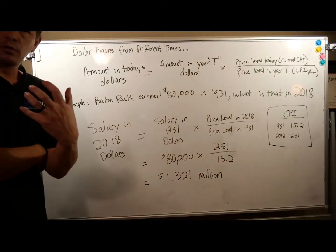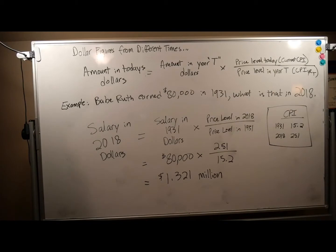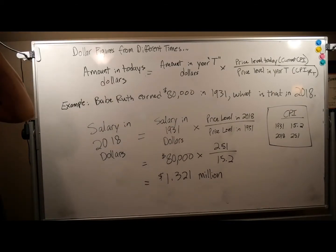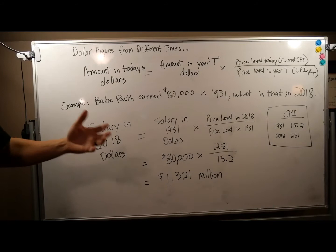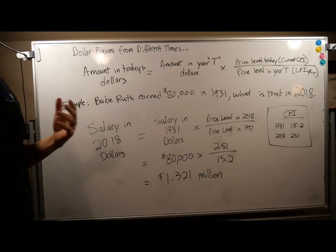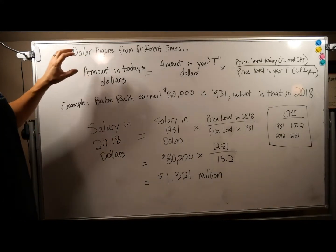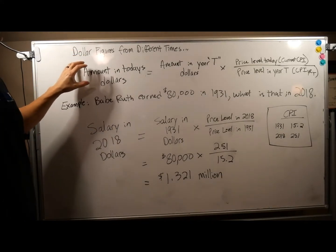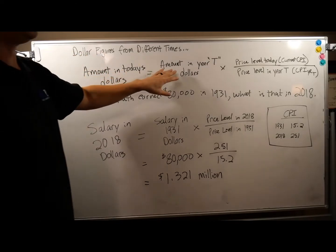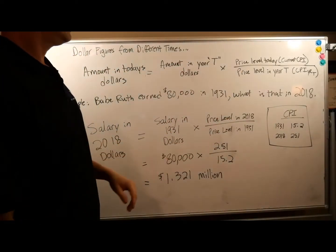How do we work this in a real-world example? Well, let's take dollar figures from different times and compare them. So essentially how we do this — and this is straight out of one of the later sections in your reading — you take the amount in today's dollars, which equals the amount in year T, some variable, some year's dollars.